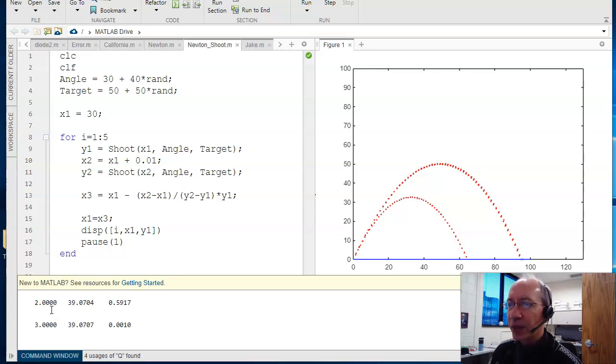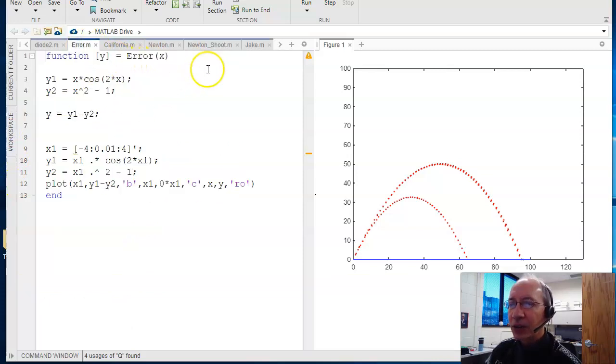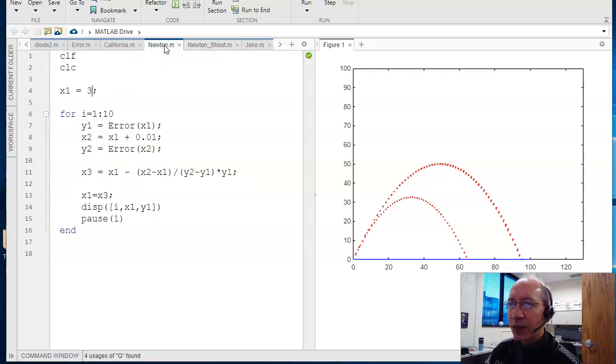That's Newton's method. If you're willing to do some calculations, you can converge much faster. That's homework set number two. The point being, I can create functions, like shoot or error. I can do scripts, like the California method, Newton's method, and do function equals zero. If you're willing to do some calculations, I can converge very, very quickly. A very useful trick you'll use throughout your four years at NDSU.